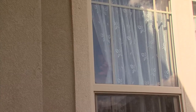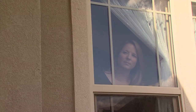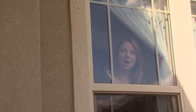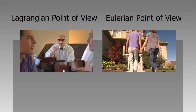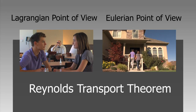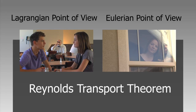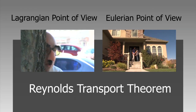In this example, Mr. Reynolds followed his daughter on her date — he used the Lagrangian point of view. Mrs. Reynolds only watched an imaginary volume that included the front porch — this is called the Eulerian point of view. As the film shows, we usually need a combination of both points of view to fully describe the physics of fluid flow. That requires the Reynolds transport theorem.